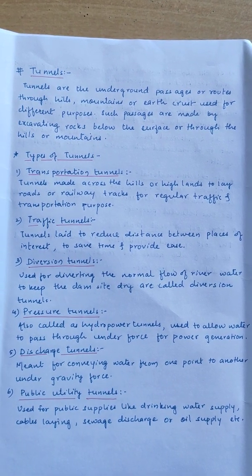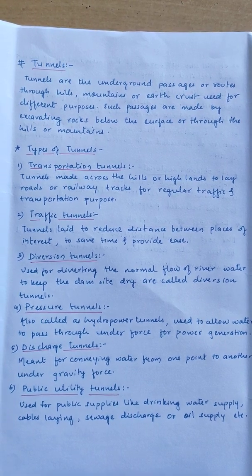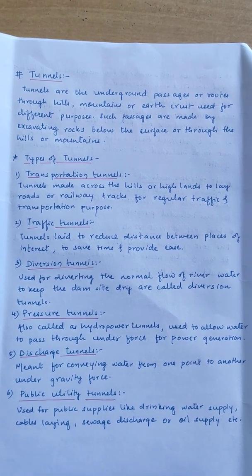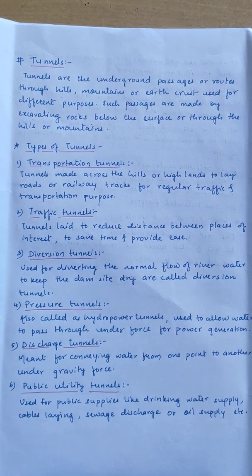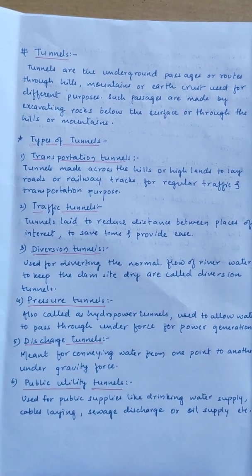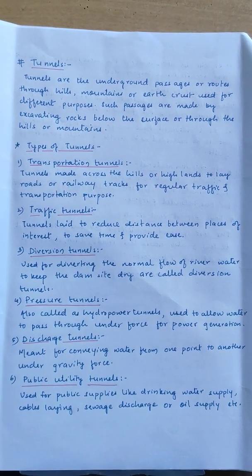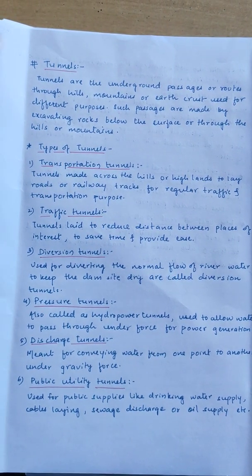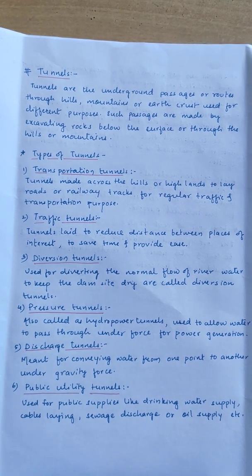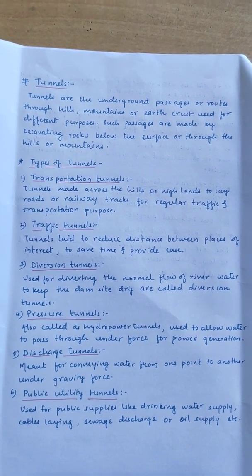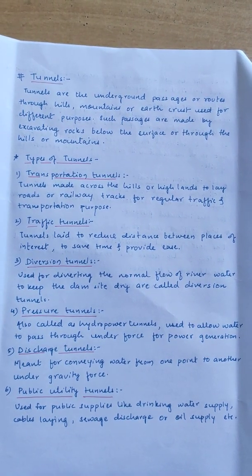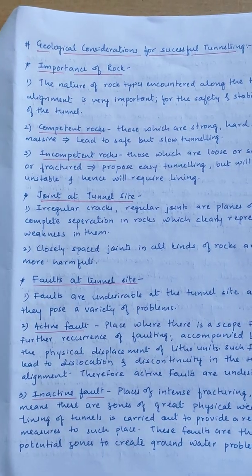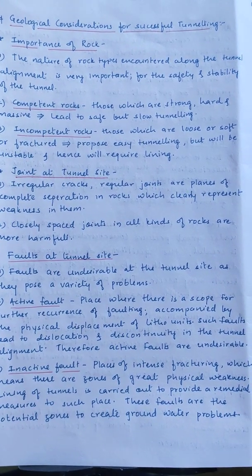The fourth type is the pressure tunnel, also called the hydropower tunnel, used to allow water to pass through under force for power generation. These tunnels are generally used at dam sites where hydroelectric power is generated. The fifth type is the discharge tunnel, meant for conveying water from one point to another under gravity. The sixth is the public utility tunnel, used for public supplies like drinking water, cable laying, sewage discharge, or oil supply.